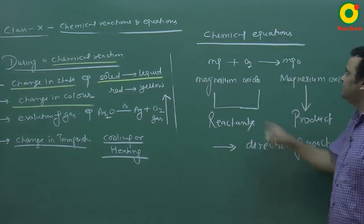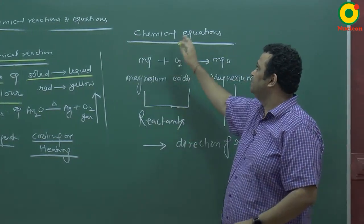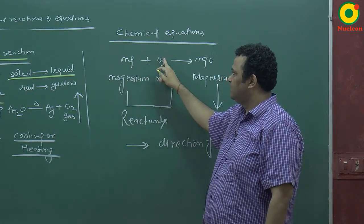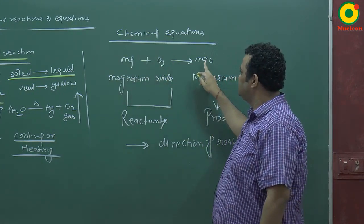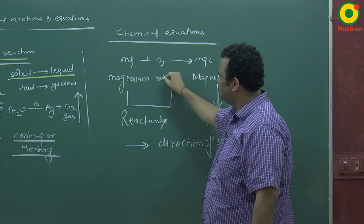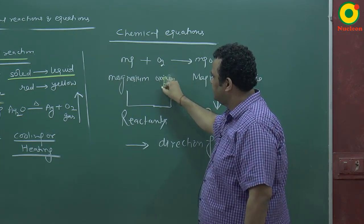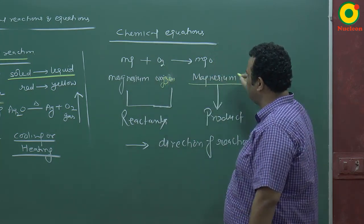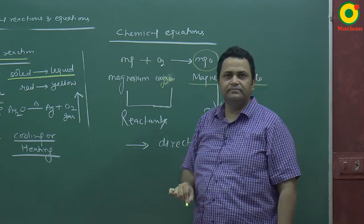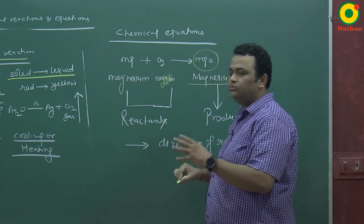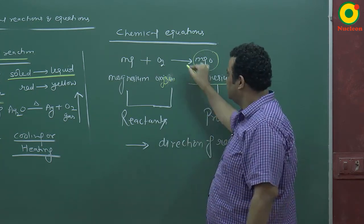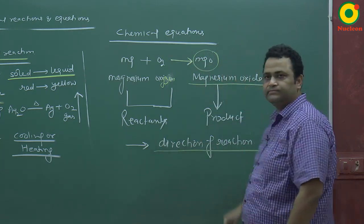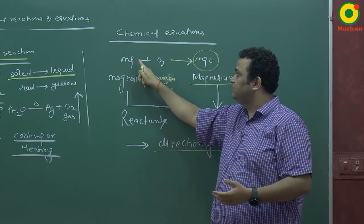Now we are moving to chemical equations. What is a chemical equation? For example, when magnesium ribbon is heated in air, the air contains oxygen gas, and magnesium oxide is formed. This compound is called magnesium oxide. We have to identify which one is the reactant and which one is the product. This arrow shows the direction of the reaction — the reaction is moving from left to right.